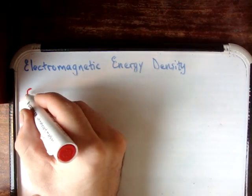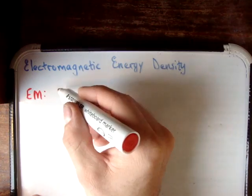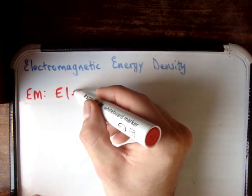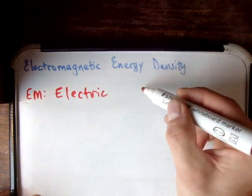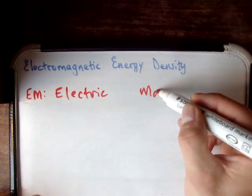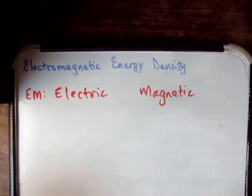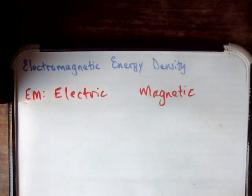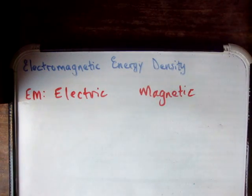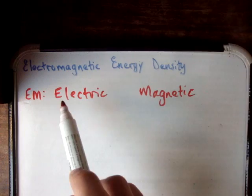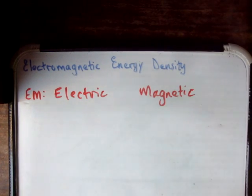We know electromagnetic waves, or electromagnetic fields, are made up of two components: both the electric and the magnetic components. And we know that these are complementary. A changing electric field creates a changing magnetic field, and a changing magnetic field creates a changing electric field. So we always have one and the other.